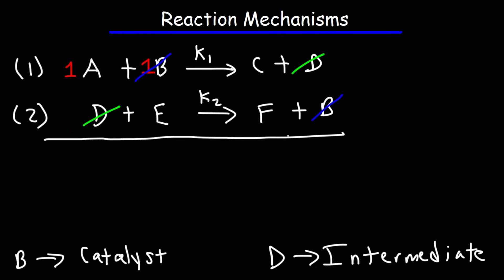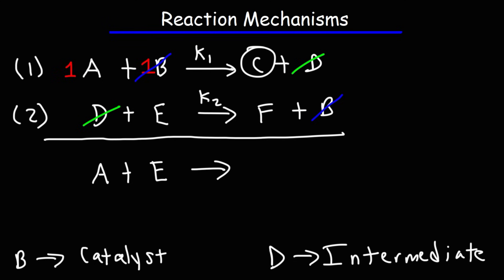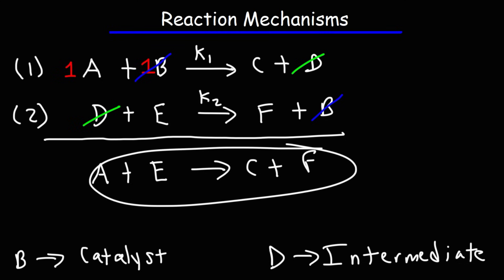Now let's write the overall reaction for this reaction mechanism. B and D have been canceled. On the left we have A and E, so this is A plus E. On the right we have C and F. So this is the overall equation.